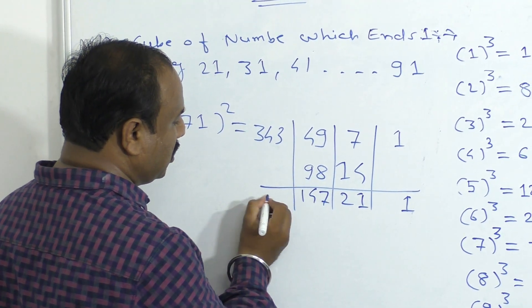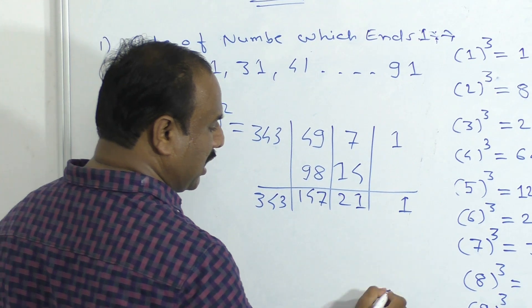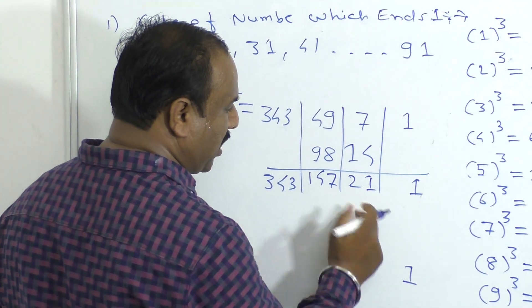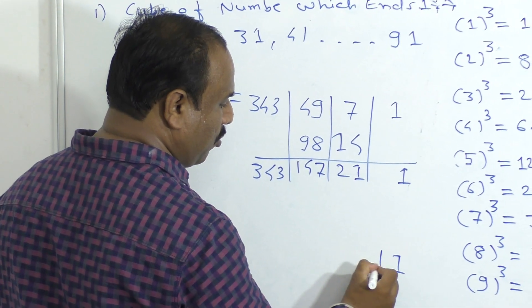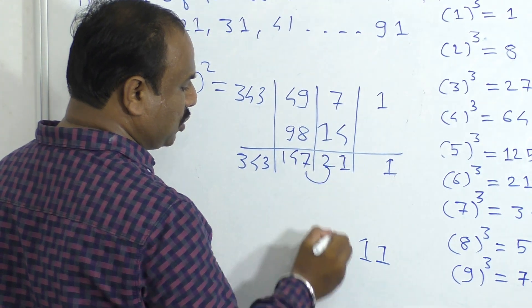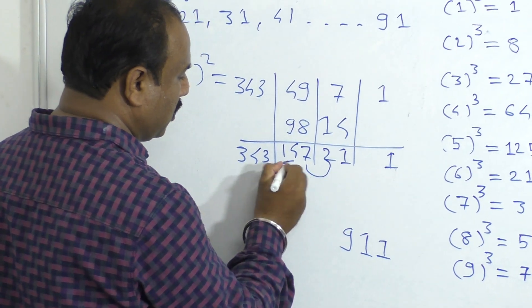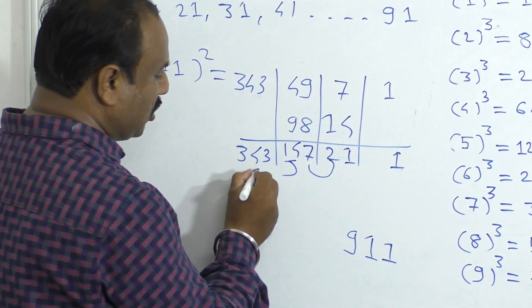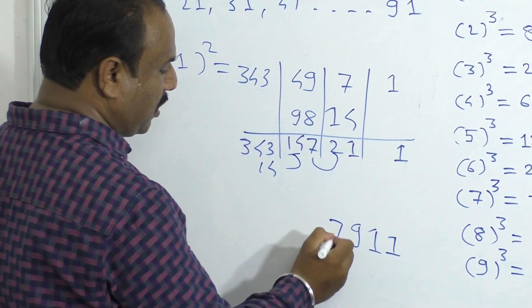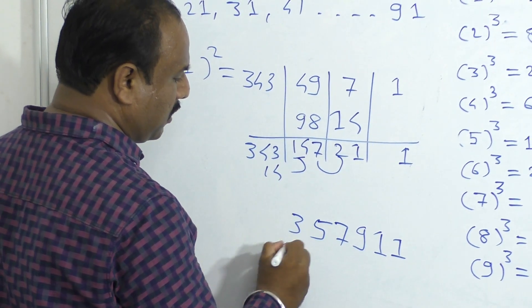So this is 3, which is 3. So what is this? 1. This part is 1. This is 2. So we have 9 plus 2. This is 14. So 4 plus 3 is 7. 4 plus 1 is 5.